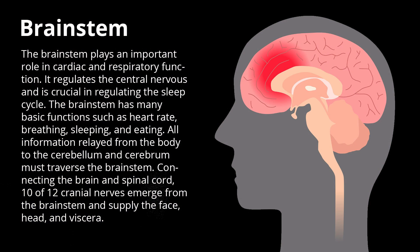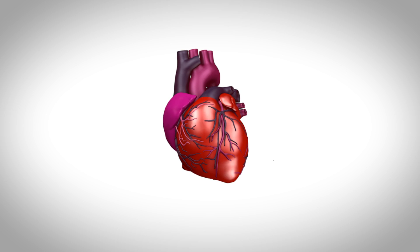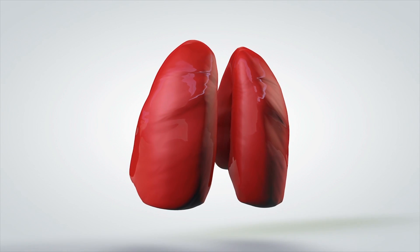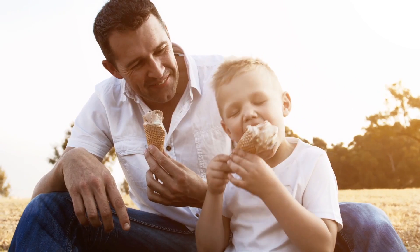The brainstem plays an important role in cardiac and respiratory function. It regulates the central nervous system and is crucial in regulating the sleep cycle. The brainstem has many basic functions such as heart rate, breathing, sleeping, and eating.